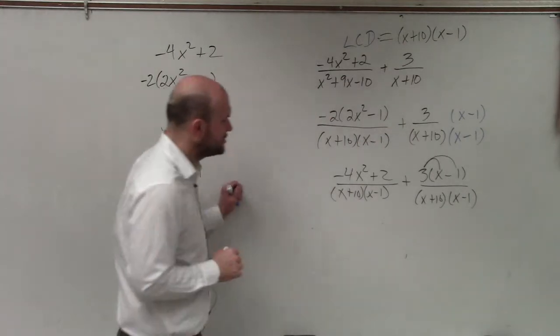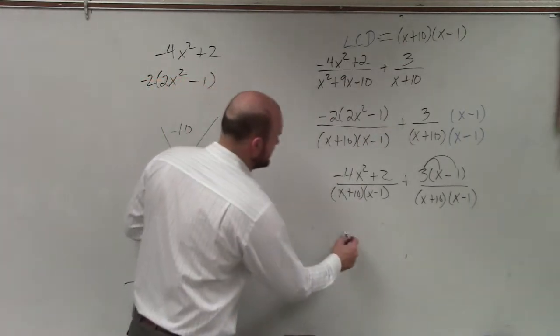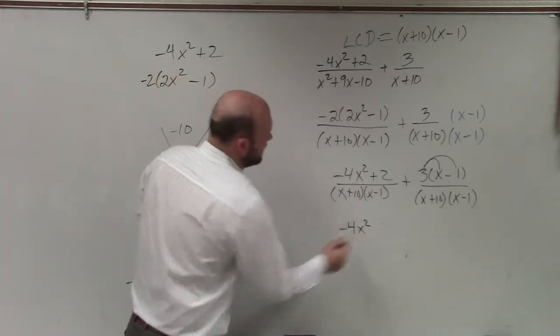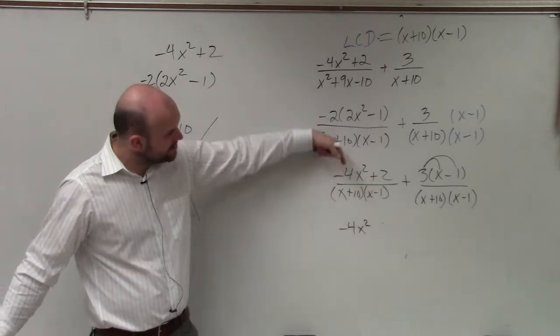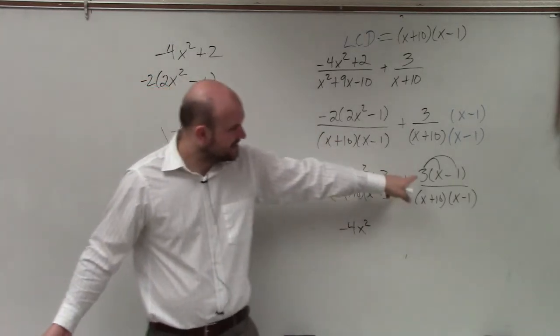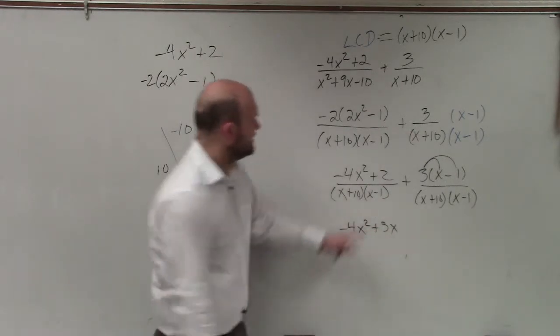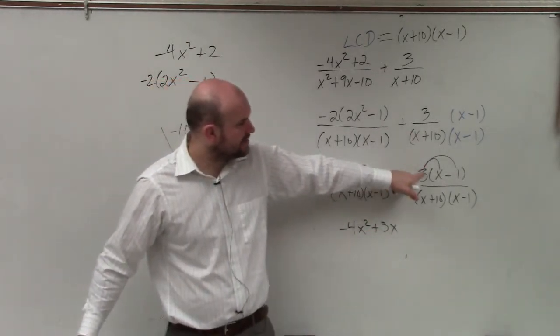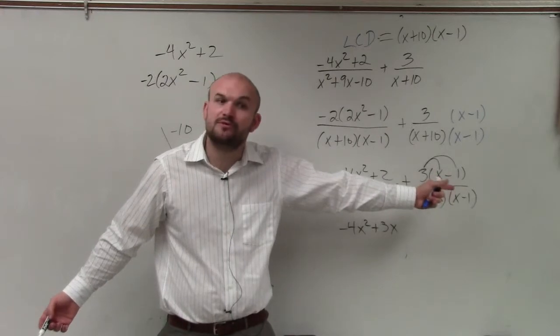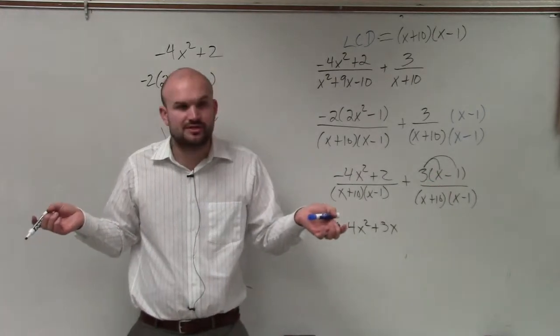And then I'll basically just combine like terms. So I have -4x². Now I have common denominators, so I can just put them over one. So I have -4x². That's going to be plus 3x. And then this is 2 plus 3 times -1, which is -3, which gives us -1 for the constant term.